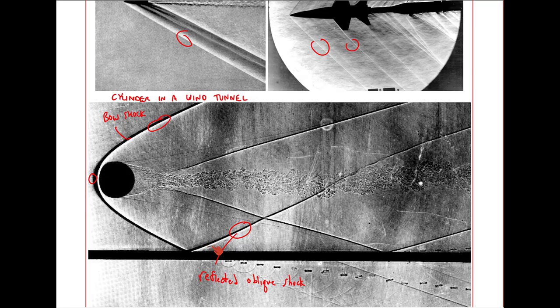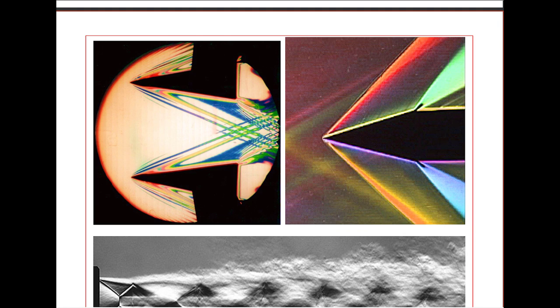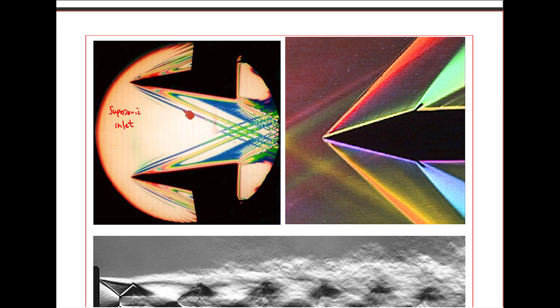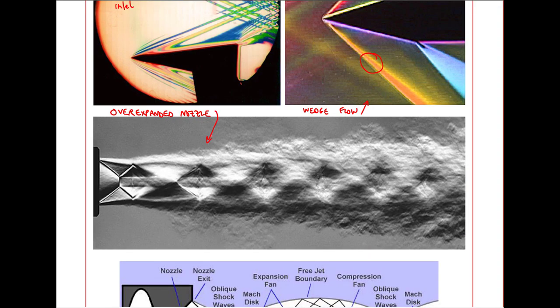We'll discuss reflected oblique shocks later. We also see oblique shocks in supersonic inlets. Here's a color Schlieren image and you see all these oblique shocks at this sharp point in the cowling. We also see oblique shocks when you have a wedge in a supersonic flow. Here's an over expanded nozzle. We can tell it's over expanded because the jet narrows down as it comes out. Here we see oblique shocks, normal shocks, and even some expansion fans.